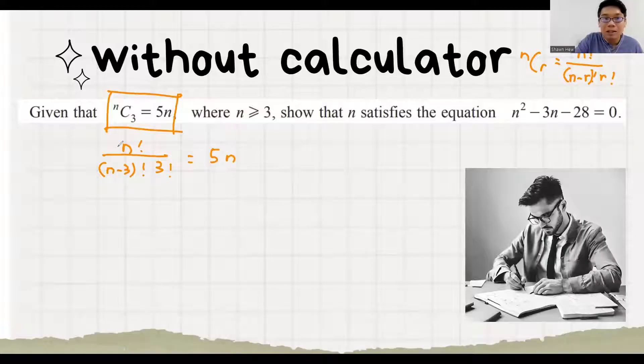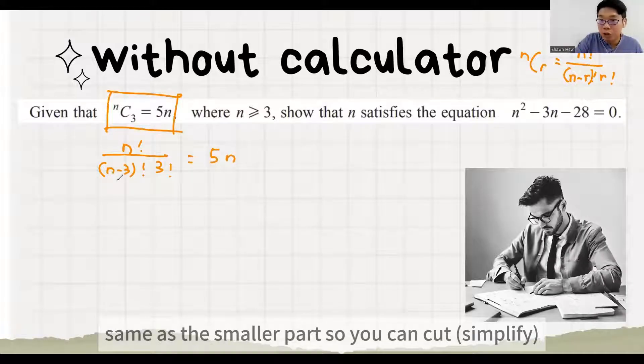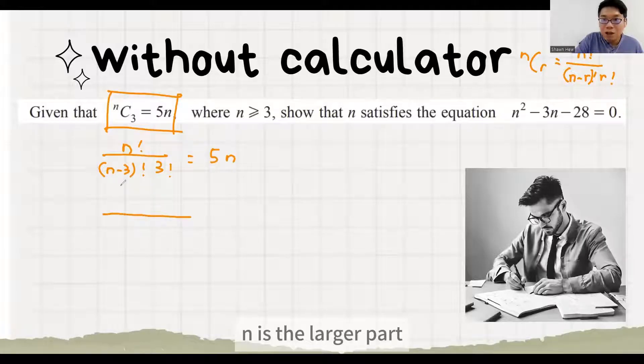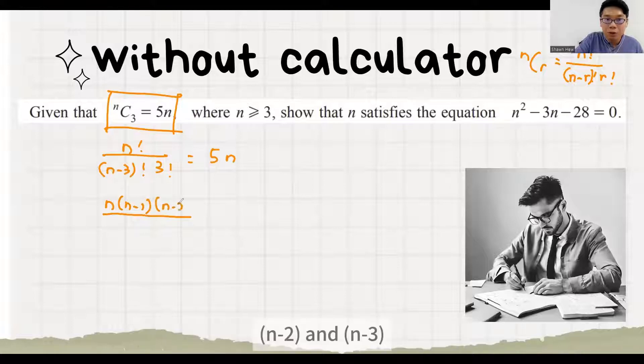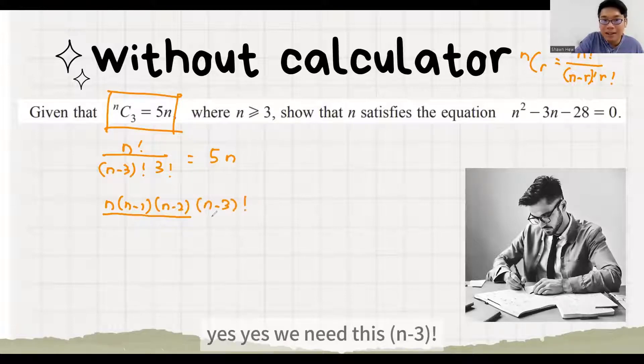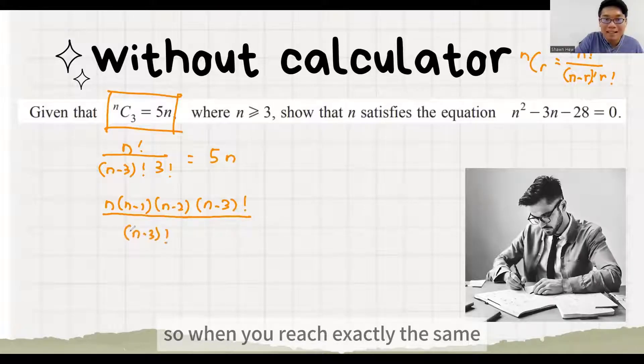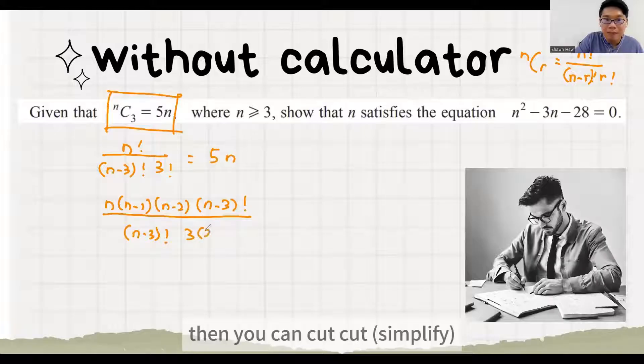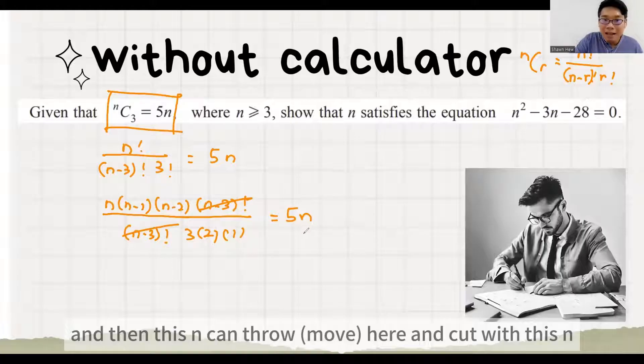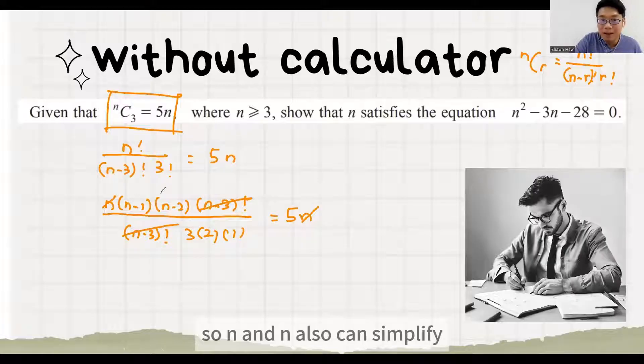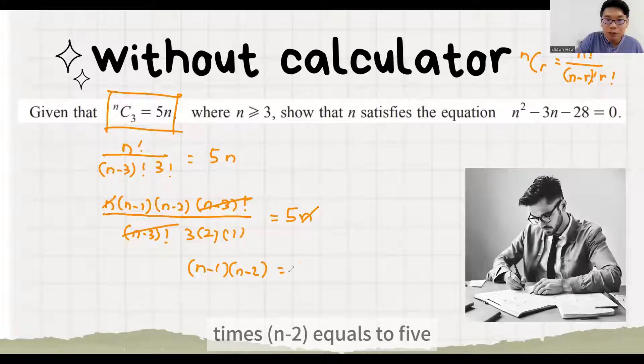We need to make the larger part same as the smaller part so you can cut. So n is the larger part because n will continue decrease to minus 1, minus 2, and minus 3. Yes, we need this n minus 3 factorial. So when you reach exactly the same, then you can cut. And then this n can show here and cut with this n. So n and n also can simplify. So we will have n minus 1 times n minus 2 equals to 5.